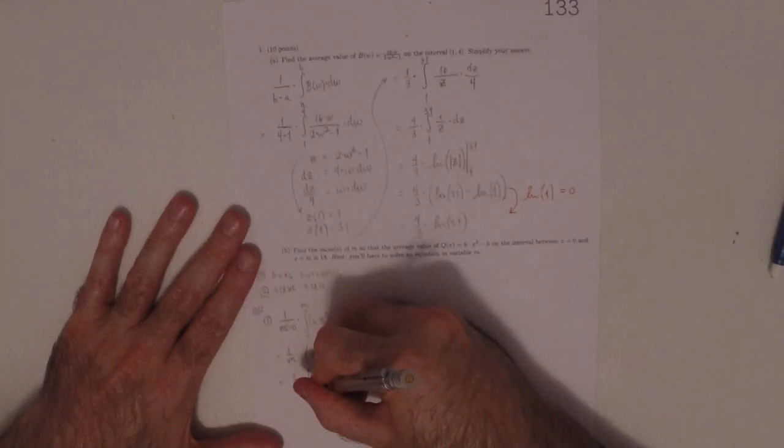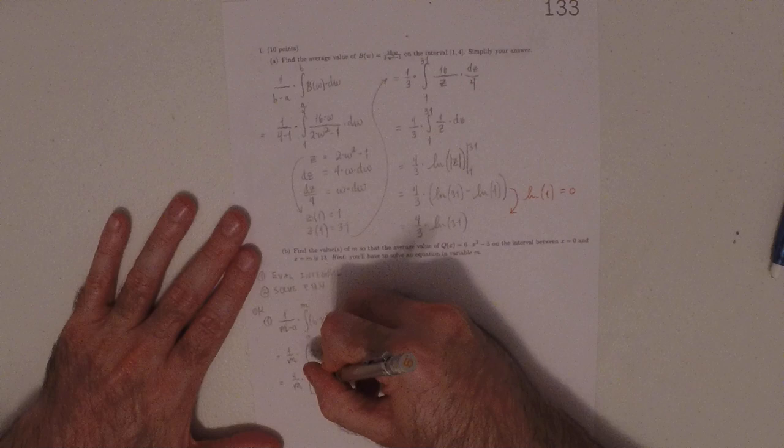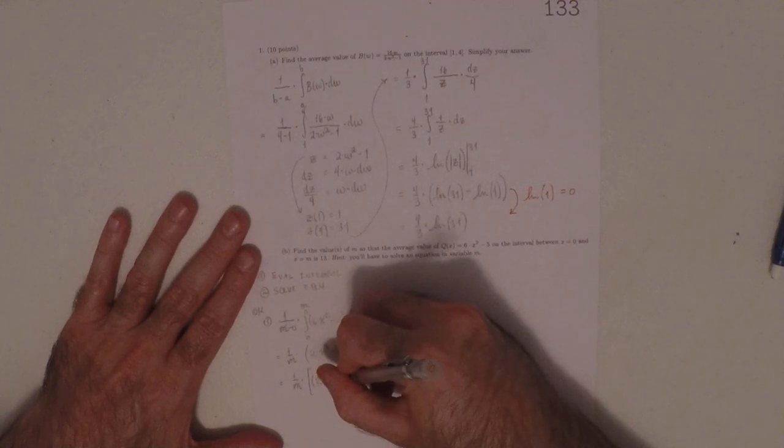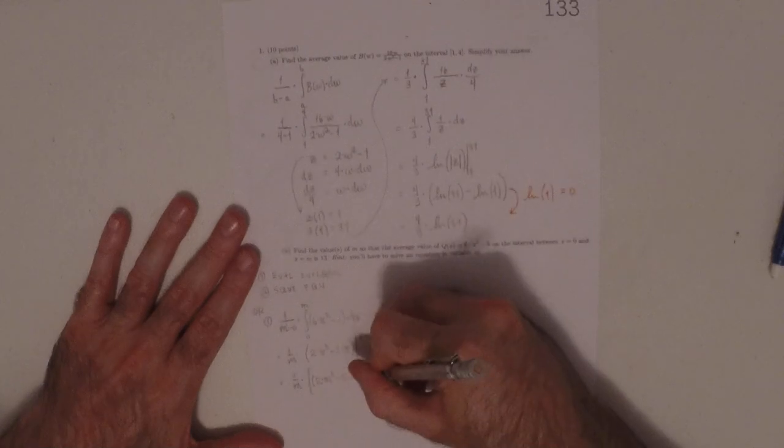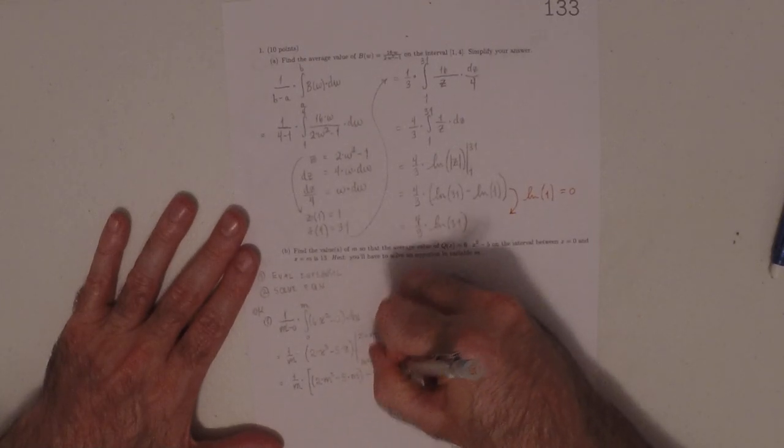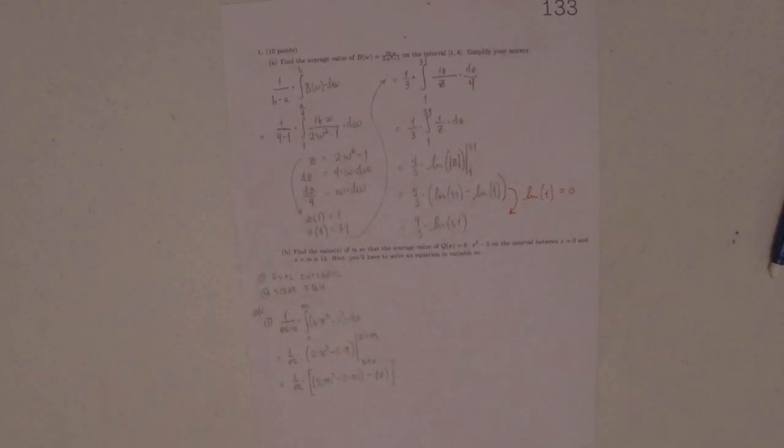This evaluated from x is 0 to x is m. That would be 1 over m multiplied by... well, plugging in m, that would just be 2m cubed minus 5m when you evaluate it at m and then subtract 0.